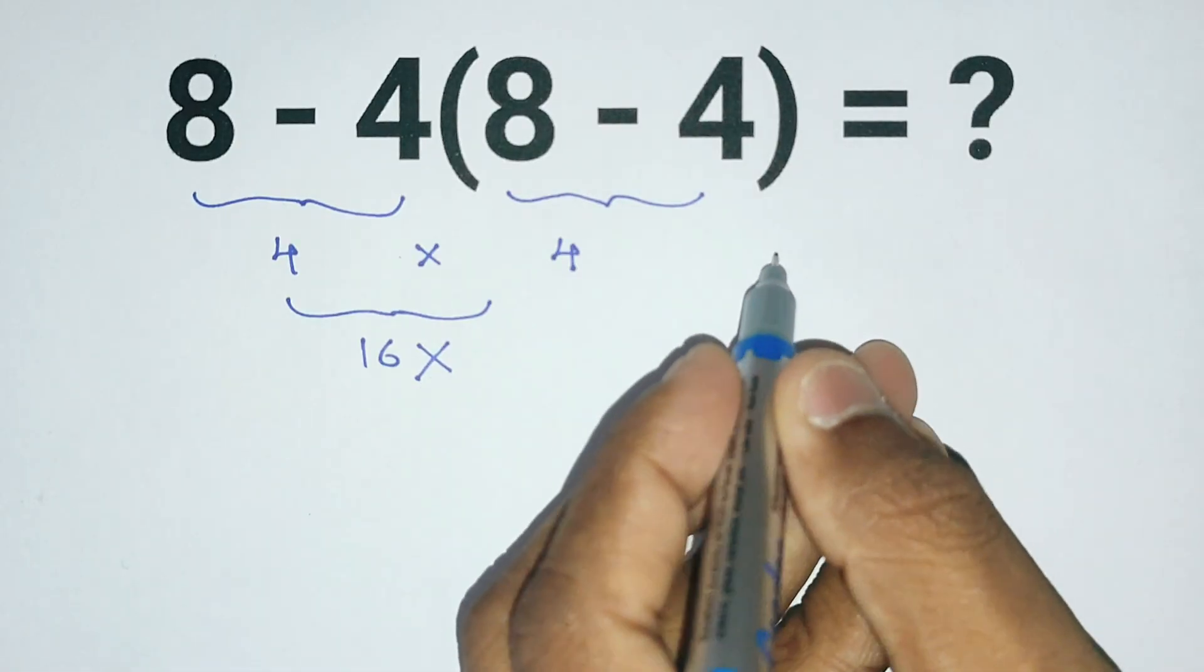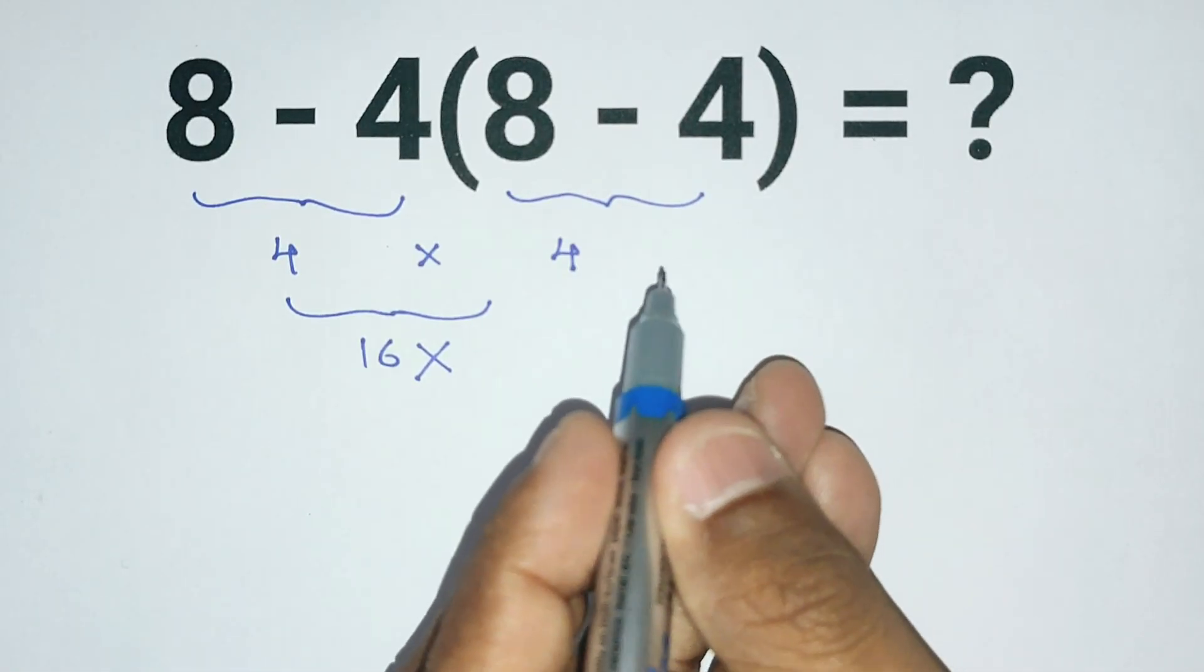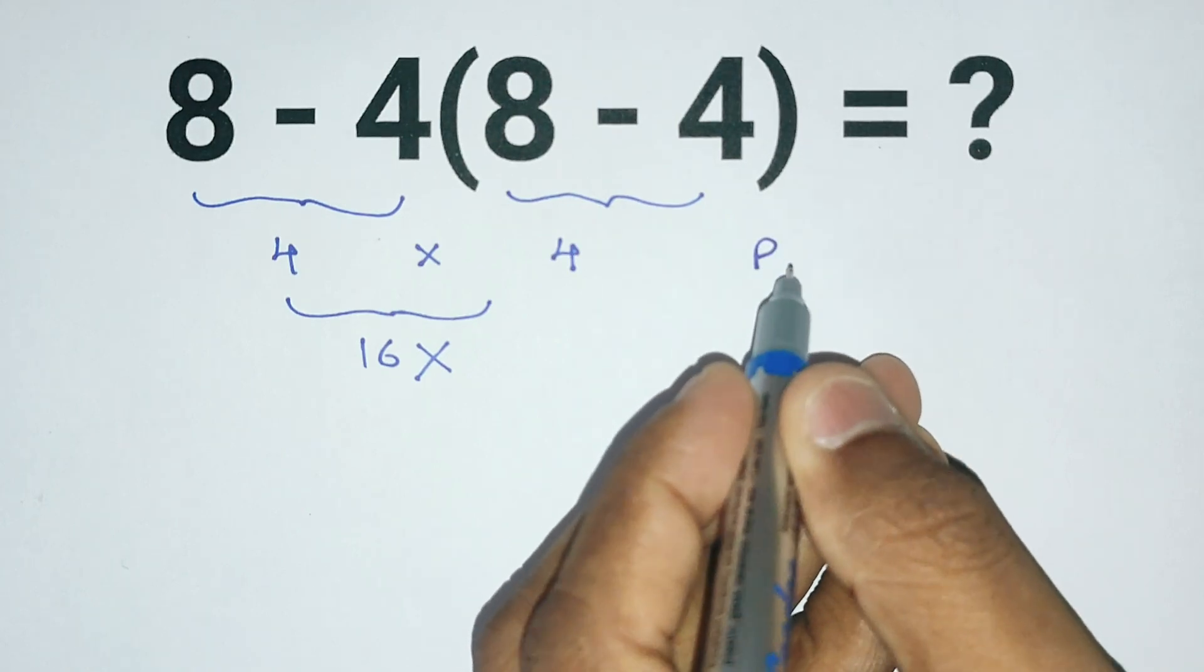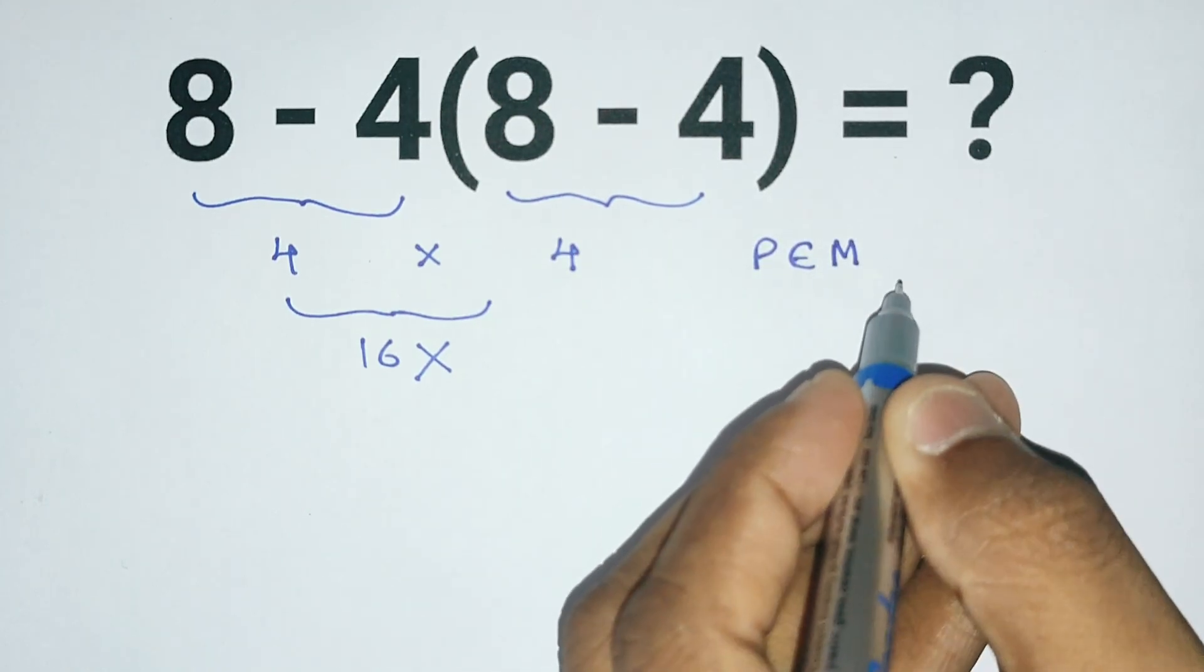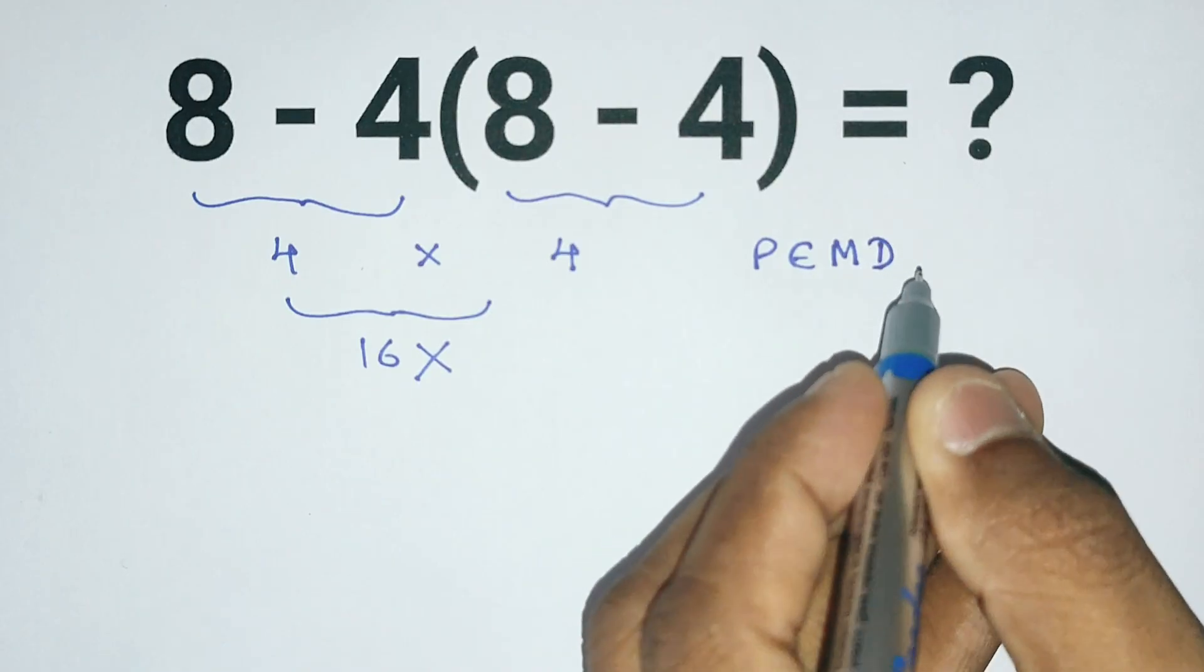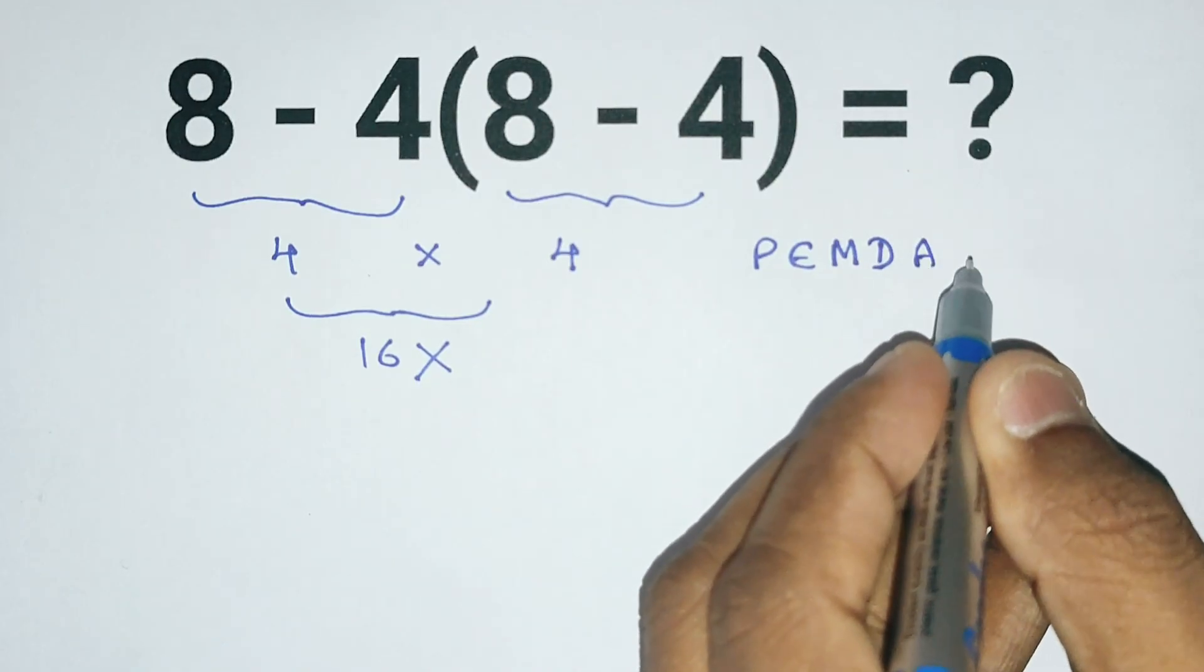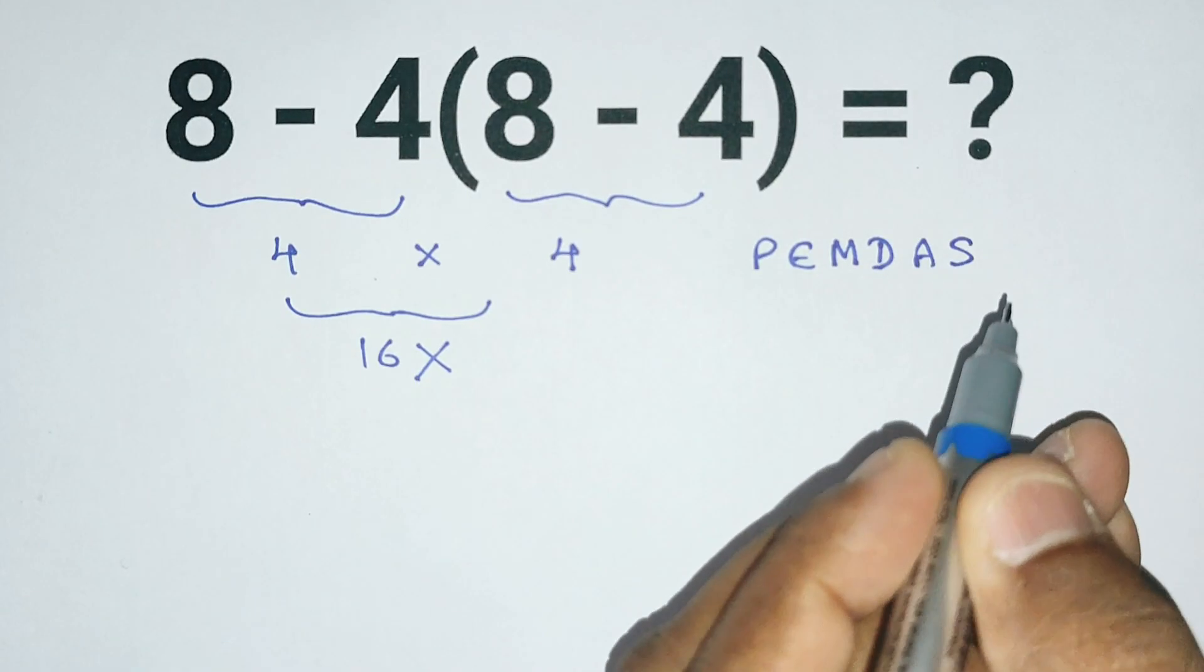You might know it as PEMDAS or BUDMAS. In PEMDAS, P stands for parenthesis, E stands for exponents, M stands for multiplication, D stands for division, A stands for addition, and S stands for subtraction.